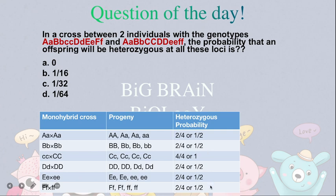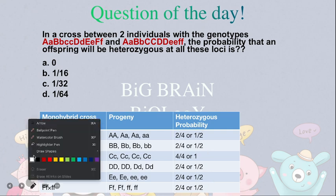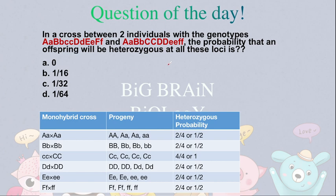So further calculating all of these monohybrid crosses, what we actually can do is, we can multiply all of these crosses: 1 by 2, 1 by 2, 1, 1 by 2, 1 by 2, and 1 by 2.